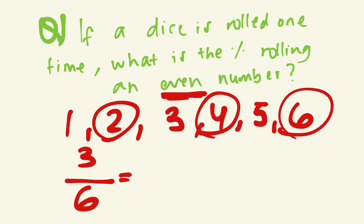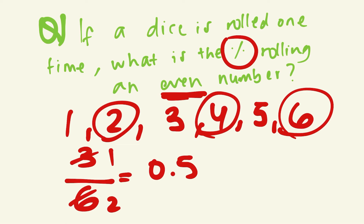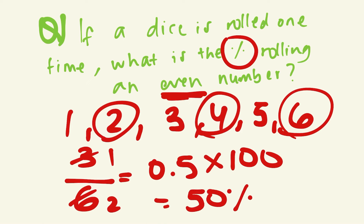The even numbers are two, four, and six — so there are three even numbers. We divide three by six, which simplifies to one over two. One over two equals 0.5, and multiplying by 100 gives 50 percent.